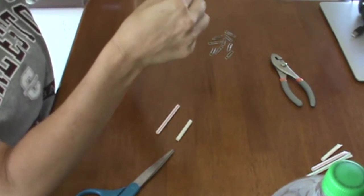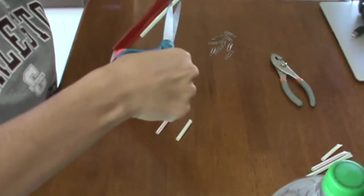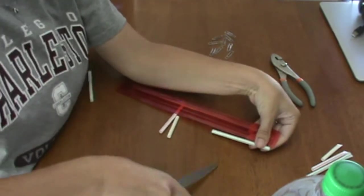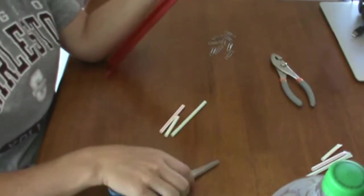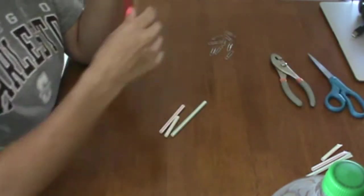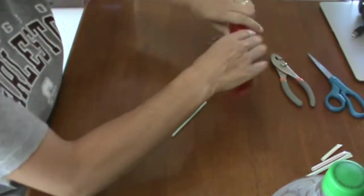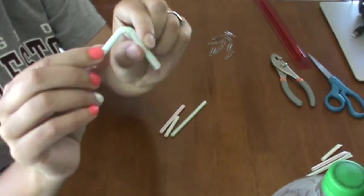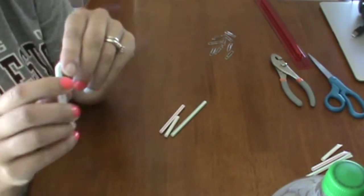Now in your instructions, here's part of the modification. In your instructions, it does say to keep the bendy part. I do have bendy straws that I'm using. And it says to keep the bendy part. For this one, you don't. For the modification, you do not keep the bendy part. So don't keep this bendy part because we're not going to bend them.